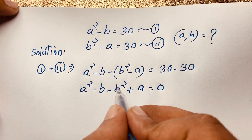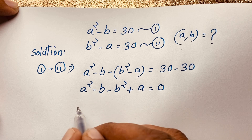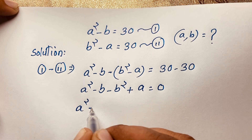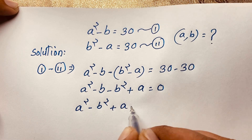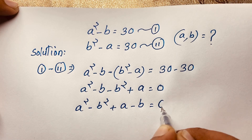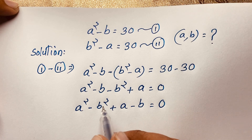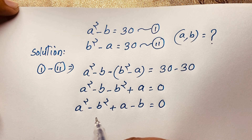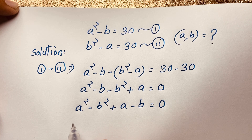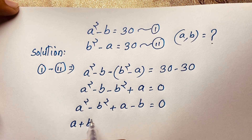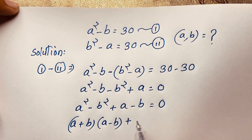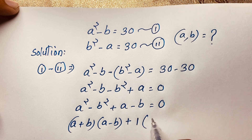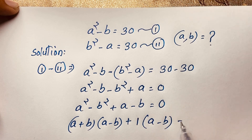If I move B squared to the other side, we get A squared minus B squared and here is positive A and negative B is equal to 0. We know that A squared minus B squared, using the identity, it will be A plus B times A minus B. According to this law, I can say this expression is A plus B times A minus B, and in the second expression, plus 1 is common, so it will be A minus B equal to 0.